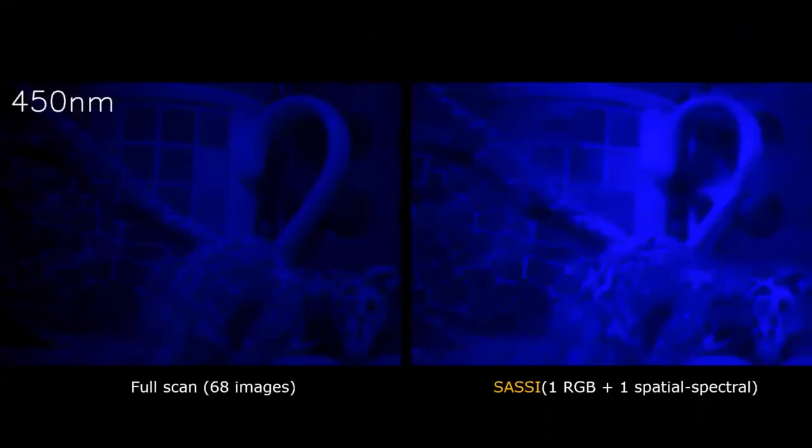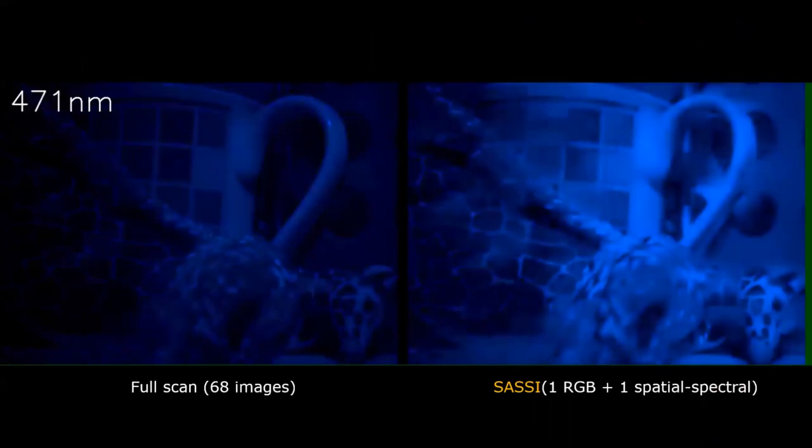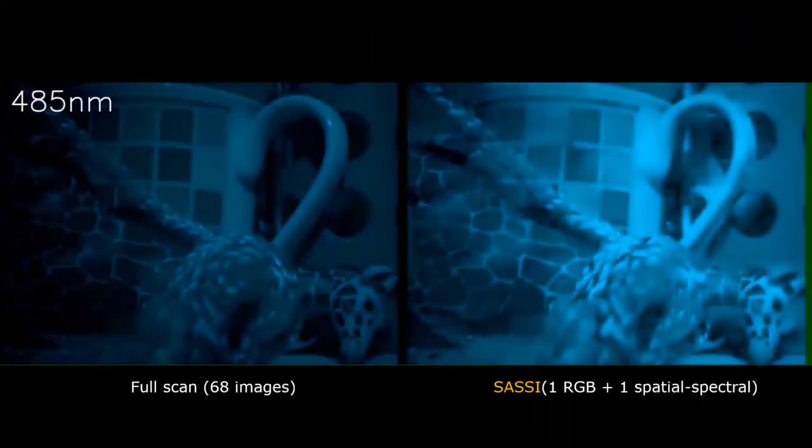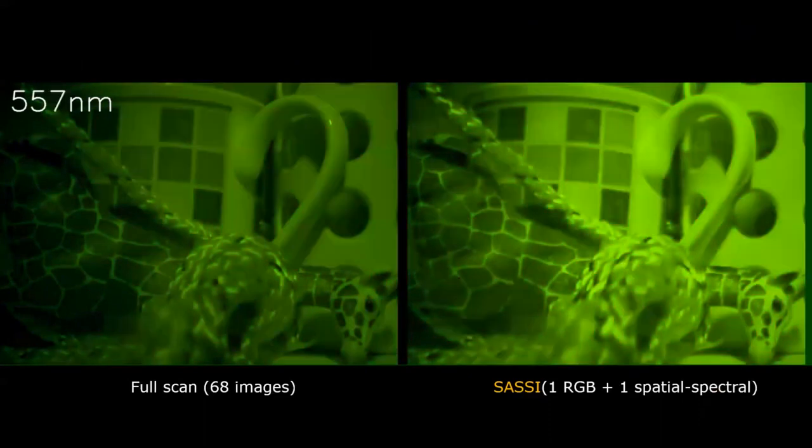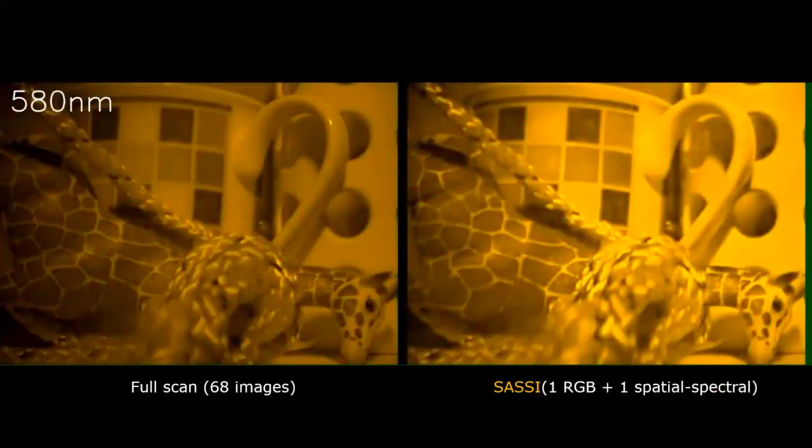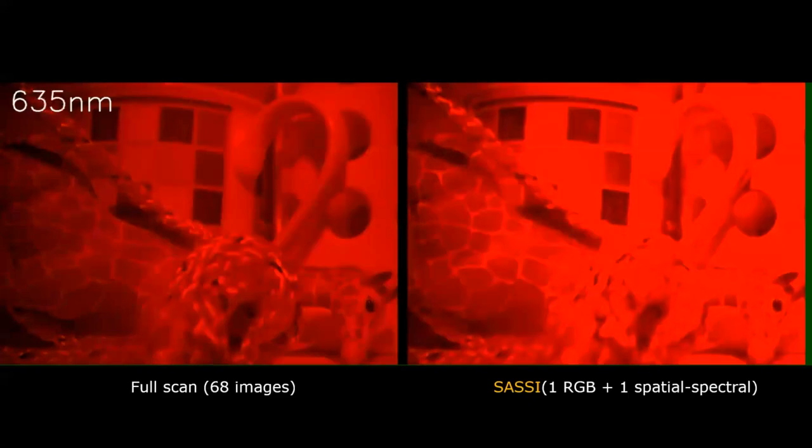Indeed, this allows us to capture high resolution hyperspectral images with just one single RGB image and one single spatial spectral image. While a full scan would have required at least 68 images, SASE required just two images, one RGB and one spatial spectral image. The spatial spectral image was measured in an adaptive and sparsely sampled manner.